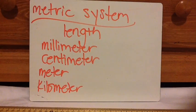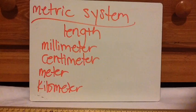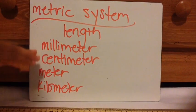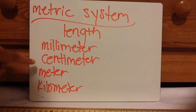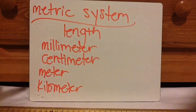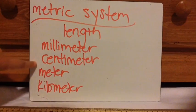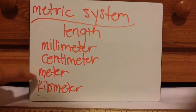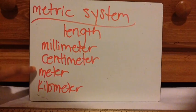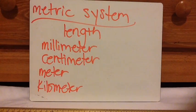Next, let's talk about the metric system of length. This is used in science and pretty much everywhere else in the world. What I really like about the metric system is that it's on a base-10 system. So 10 millimeters equal one centimeter, 10 centimeters equal a decimeter, 10 decimeters equal a meter, and 1,000 meters equals a kilometer. It's a very easy system to remember.